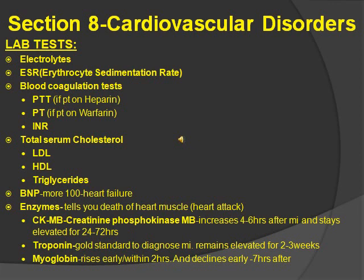CKMB, creatine phosphokinase MB, increases four to six hours after a heart attack and stays elevated for 24 to 72 hours. Troponin is another enzyme — it's the gold standard to diagnose myocardial infarction and remains elevated for two to three weeks. Myoglobin rises early, within two hours of a heart attack, and declines early, around seven hours after. For more detail on lab values, check the description box.